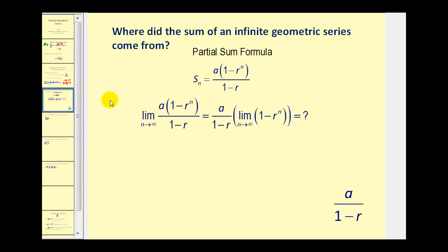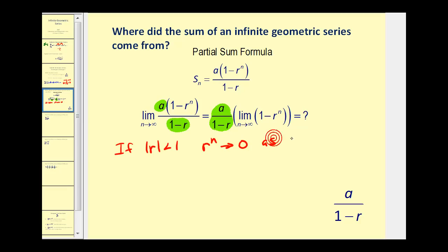Let's look at this in a more formal way. The partial sum formula for a geometric series, if we take the limit as n approaches infinity, should give us the infinite sum. Notice that a and one minus r are not affected by n, so we can factor those out, leaving the limit as n approaches infinity of one minus r to the power of n. If the absolute value of r is less than one, then r to the power of n approaches zero as n approaches infinity. So this becomes one minus zero, which equals one, giving us a divided by one minus r — the formula for the sum of an infinite geometric series.